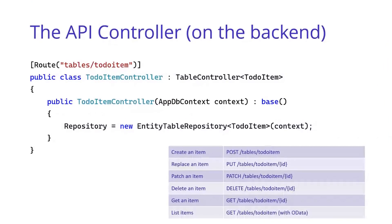What this controller does for you is it gives you six specific routes. You get the basic CRUD — so create, replace, delete. You get the ability to update with a patch, and you can use JSON patch or the more normal JSON merge patch. And you get the ability to get an item and list items. The list items allows you to do basic filtering on any field, select the fields that you want, and do paging.